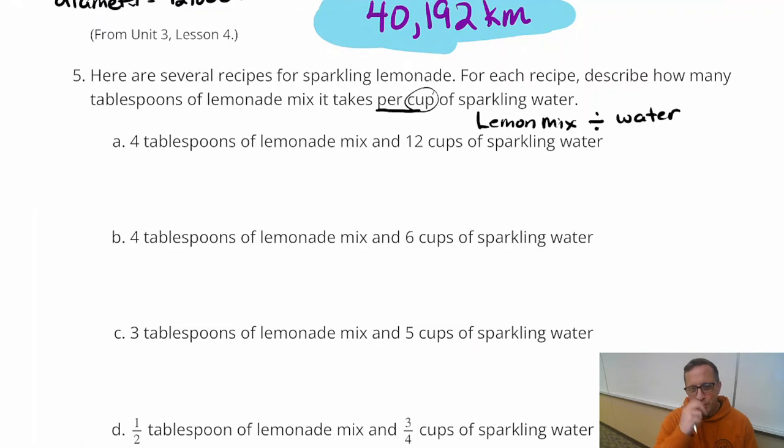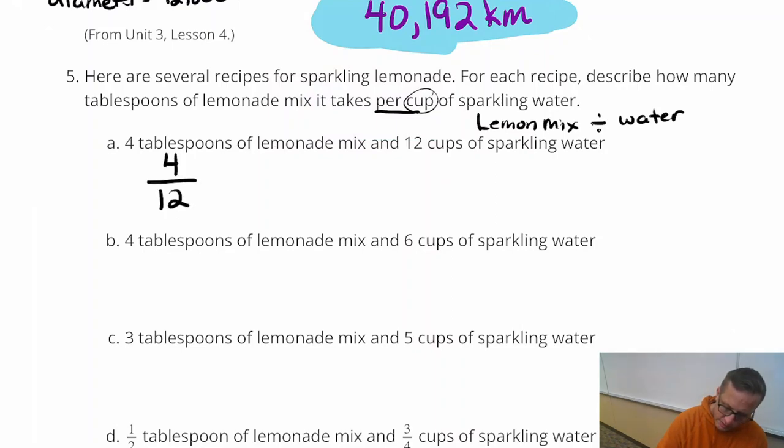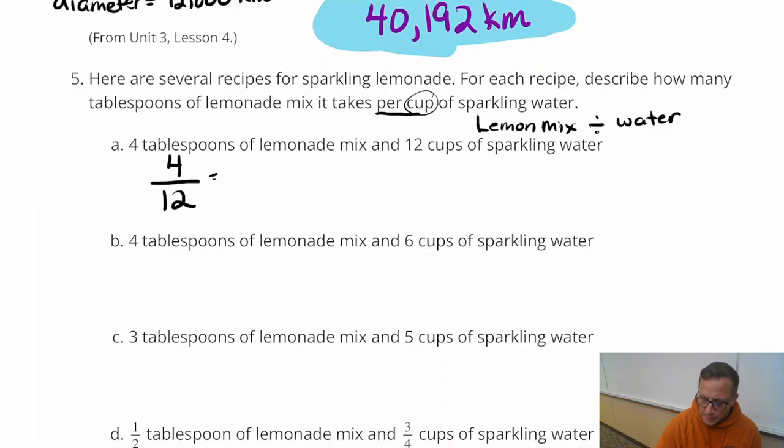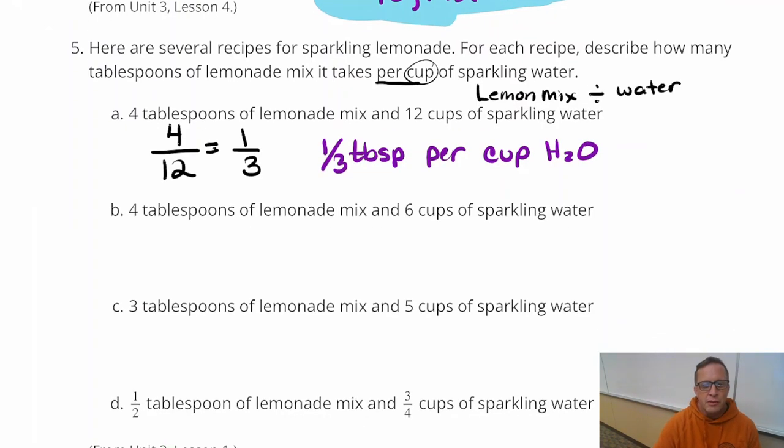But anyhow. Four tablespoons of lemonade mix and twelve cups of sparkling water. And so we're going to do four divided by twelve. Now, four divided by twelve, if you do that in your calculator, you're going to get .3333333, which I don't like to put. That's not a great answer to put down. Let's leave it as a fraction. One-third. So four divided by twelve is one-third. So what that means is, it's going to take one-third tablespoon per cup of fancy water.